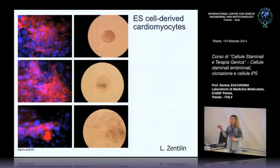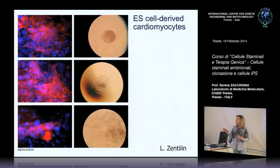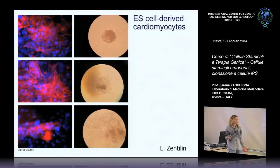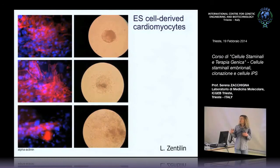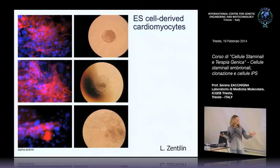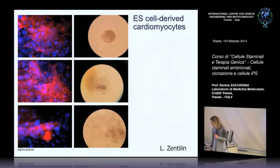Questi esempi, prodotti in laboratorio, mostrano il differenziamento in senso cardiomiocitario: se si prende un'isola di cellule staminali embrionali e la si lascia in coltura, alcune spontaneamente iniziano a differenziarsi in senso cardiaco. Questo non è sorprendente, poiché il cuore è una delle prime strutture a formarsi nell'embrione. Come si vede, l'intera massa di cellule staminali embrionali inizia a pulsare. All'interno non ci sono solo cellule cardiache — ci sono cellule che si stanno differenziando in vari tipi — ma il fenotipo contrattile fa contrarre in maniera sinergica tutto l'ammasso.